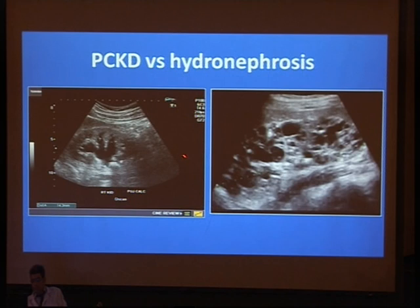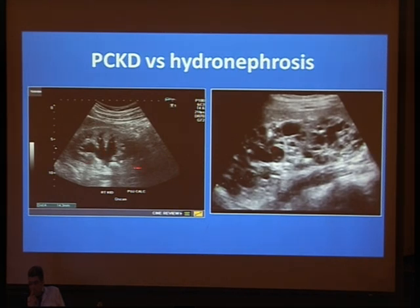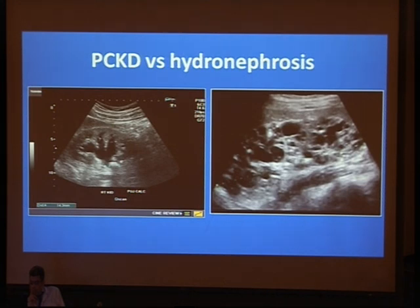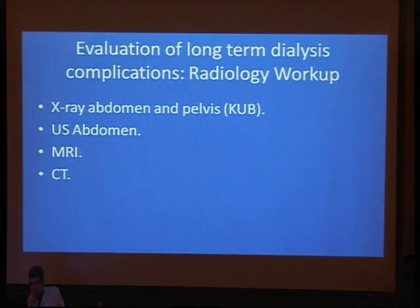Also, ultrasound can differentiate this case of acute obstruction with elevated serum creatinine from a case with polycystic kidney disease. This is an acute case with a dilated renal pelvis that can be treated surgically to salvage the kidney, versus a case of chronic kidney disease with polycystic kidney disease. So ultrasound can play an initial role in confirming chronic kidney disease before hemodialysis.